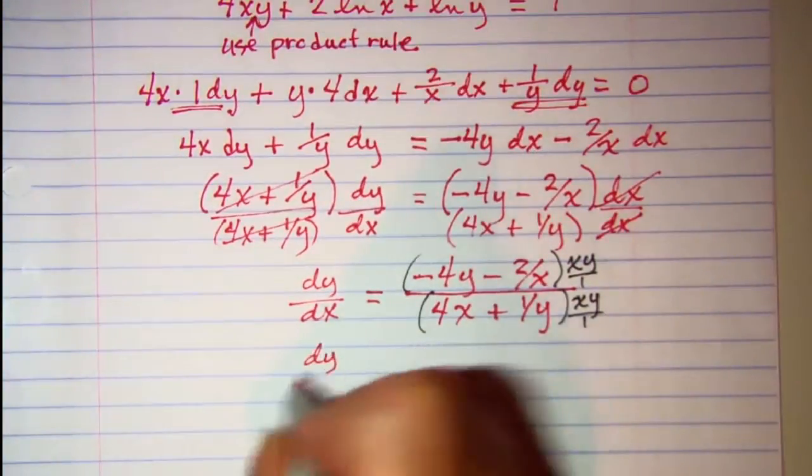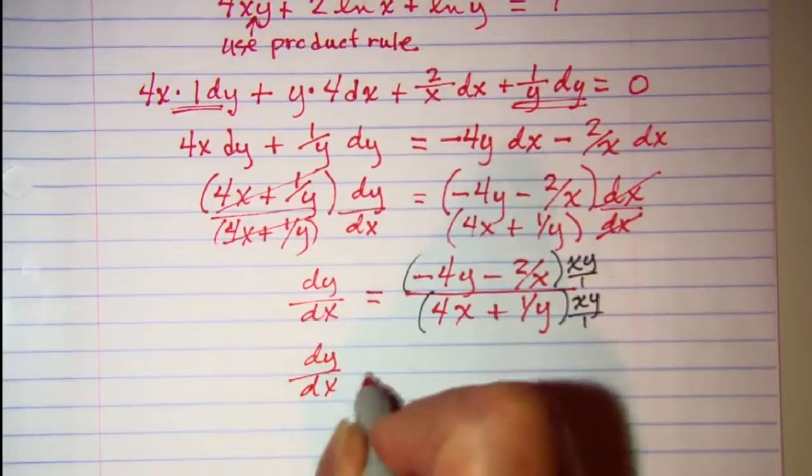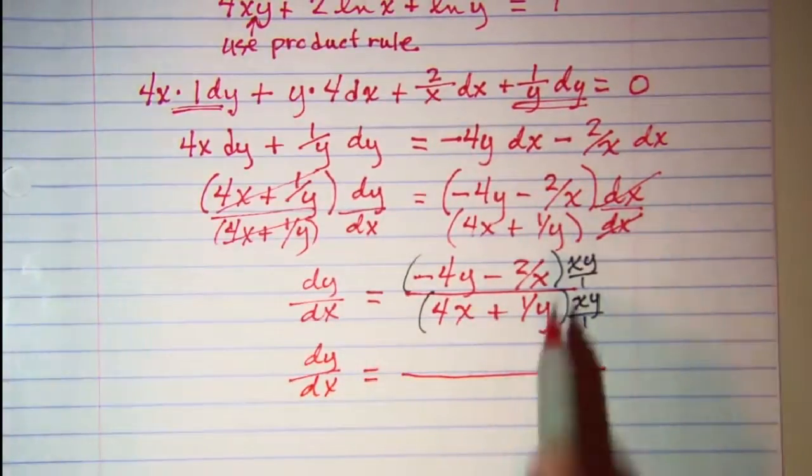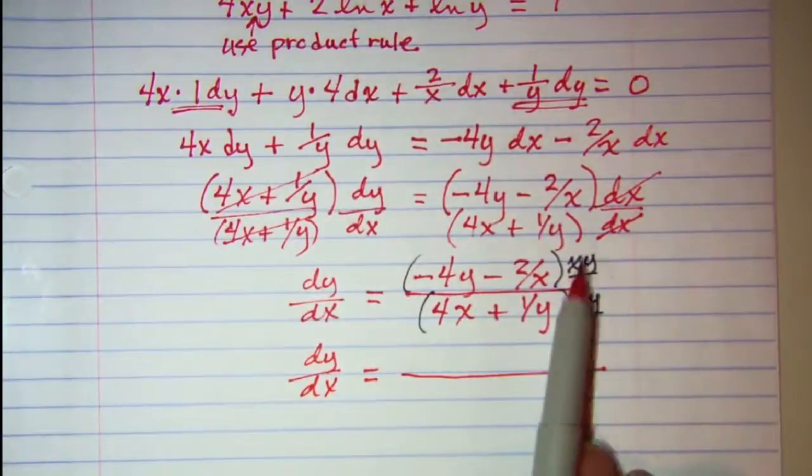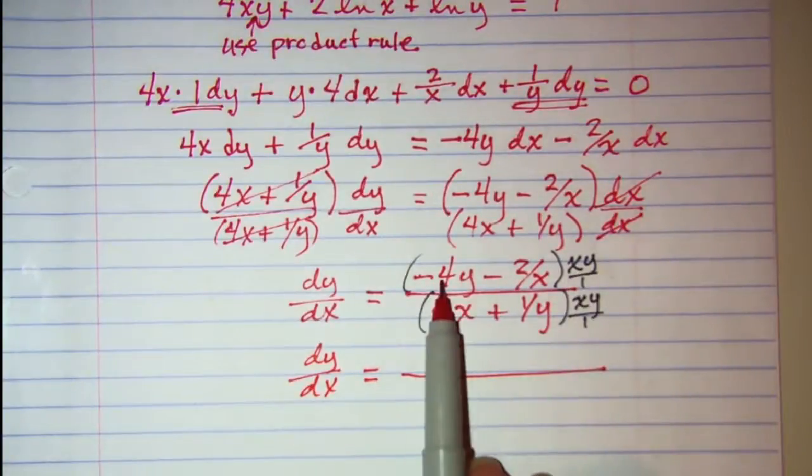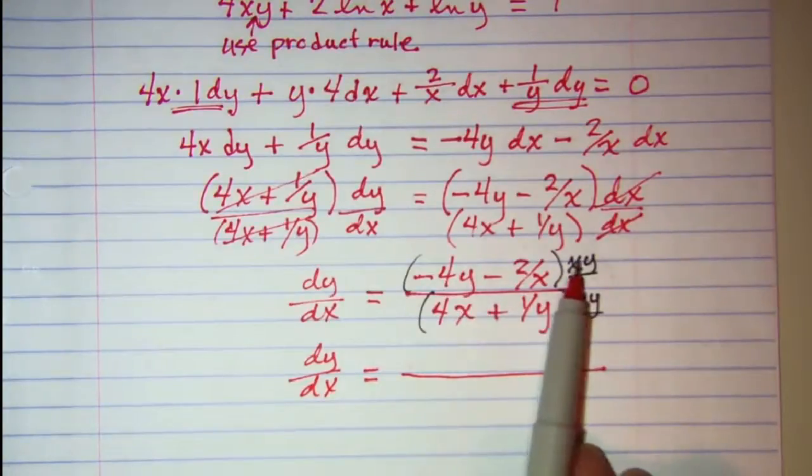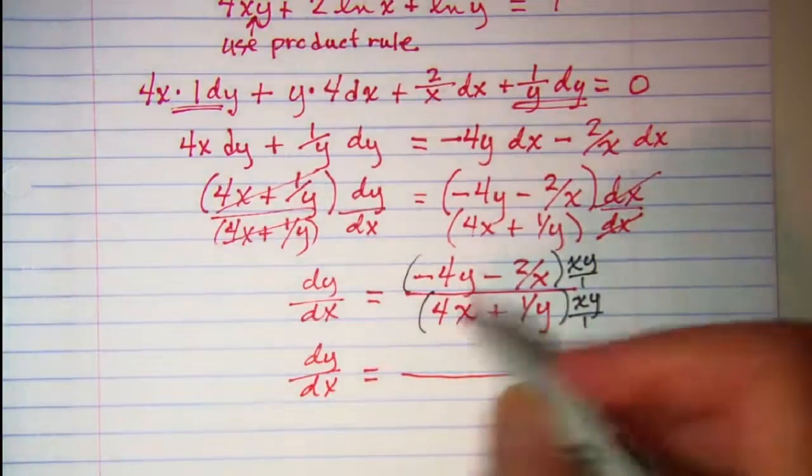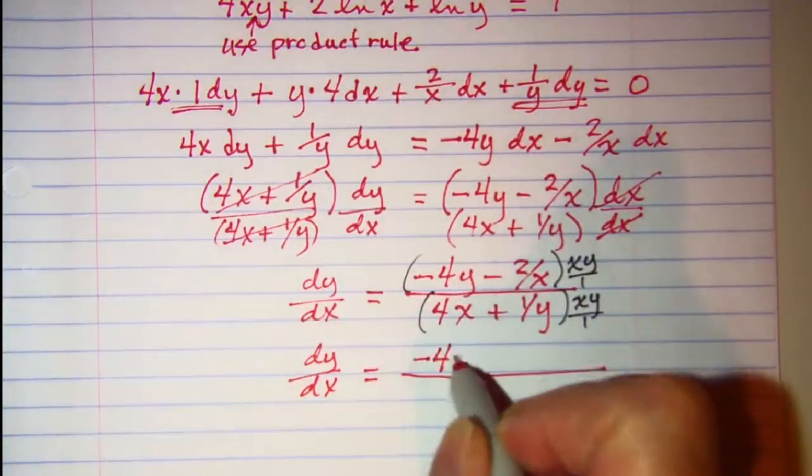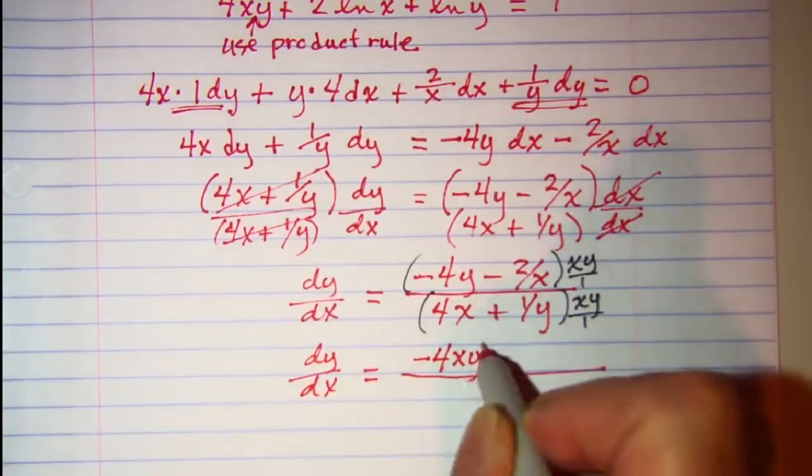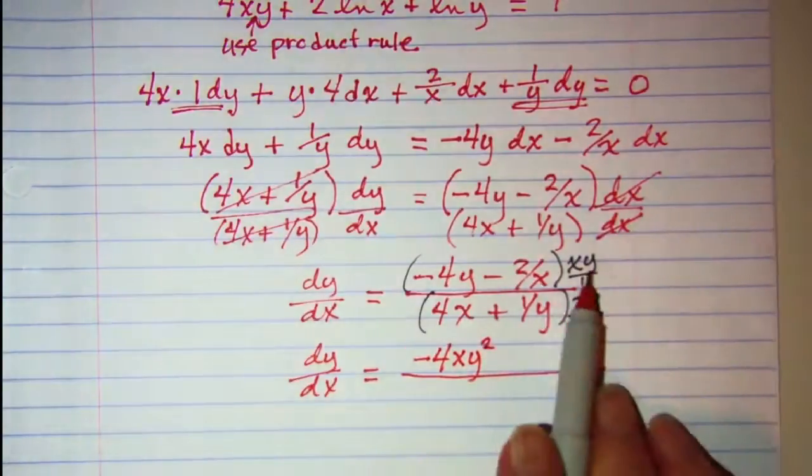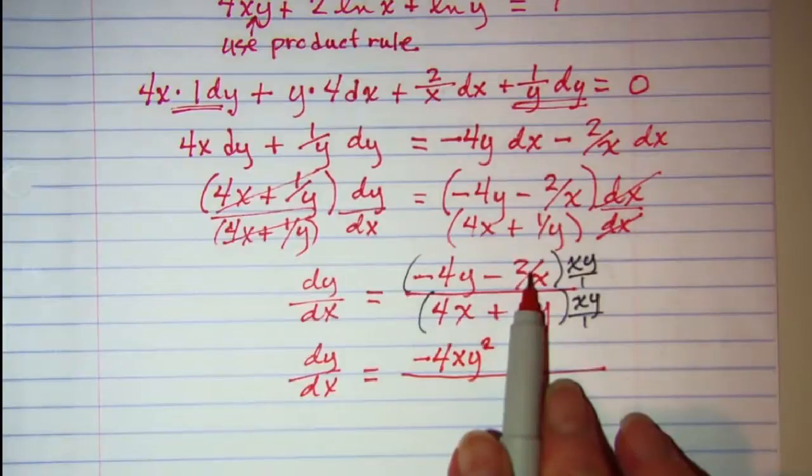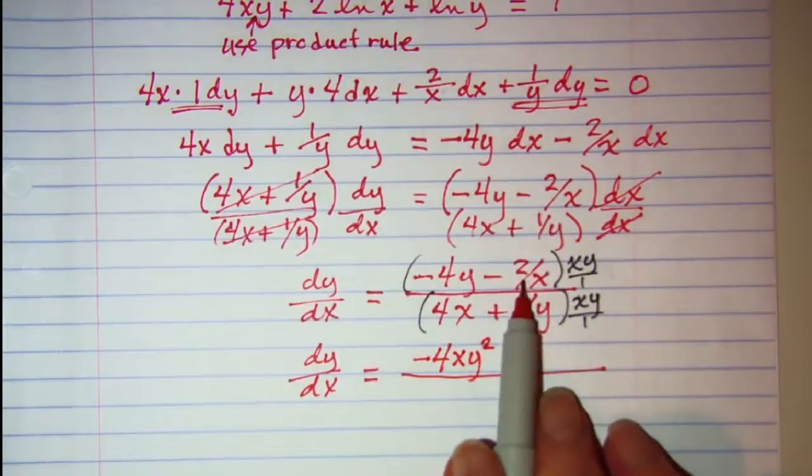So I have dy/dx equals, now I will distribute xy into this term and nothing is going to cancel. So I have negative 4xy squared. When I distribute xy into this term my x's cancel and I have minus 2y.